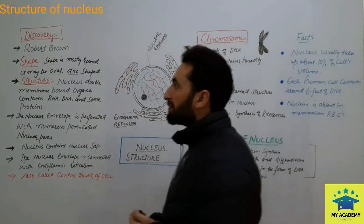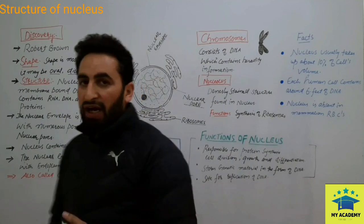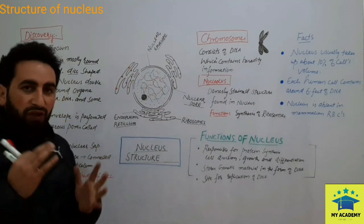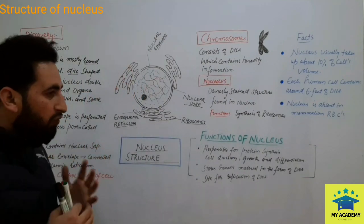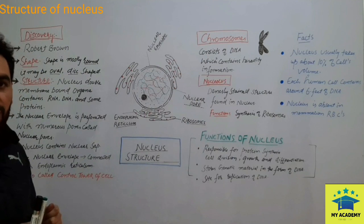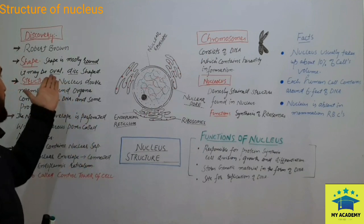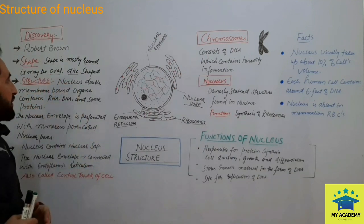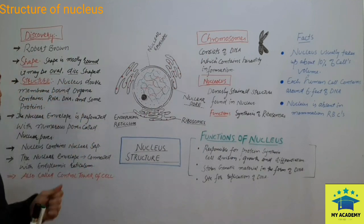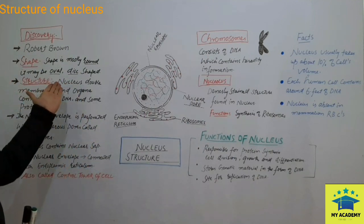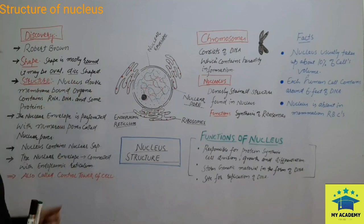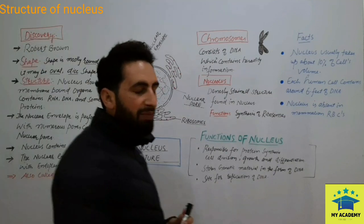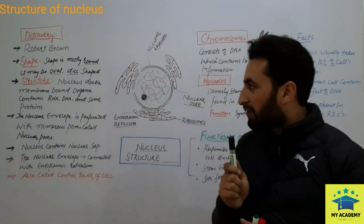Now let's look at the shape of the nucleus. It is generally round shaped, but it may be oval shaped or disc shaped. Generally, the shape of the nucleus is round.